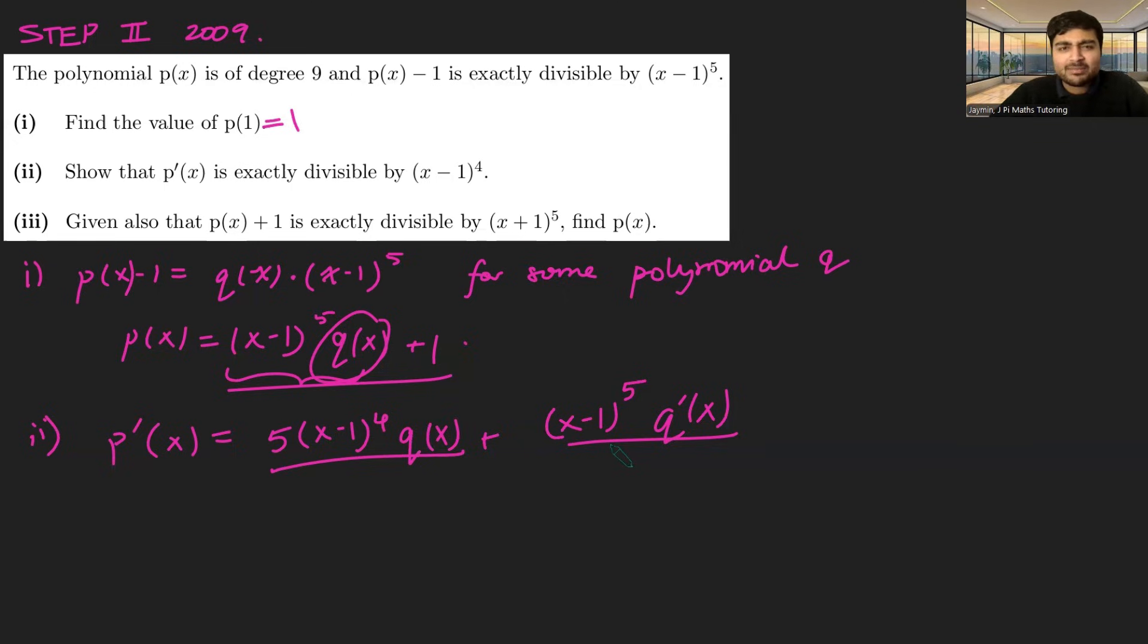Part 3. We're given also that p(x+1) is exactly divisible by (x+1)^5. We want to find p(x). Okay, now I'll leave the details to you, but you can kind of check doing something similar as to what we did in part 2. We can get that p'(x) is a multiple of (x+1)^4 as well. So it's (x+1)^4 times, let's say, r(x) for some polynomial r.